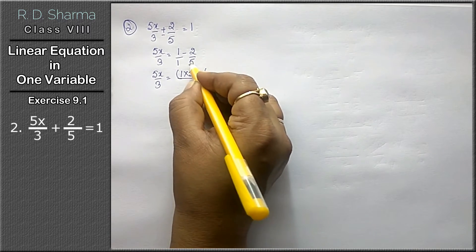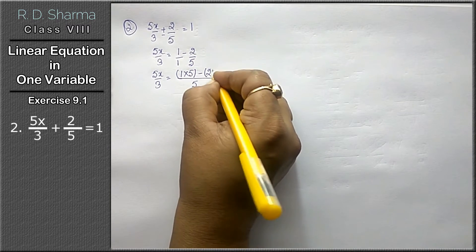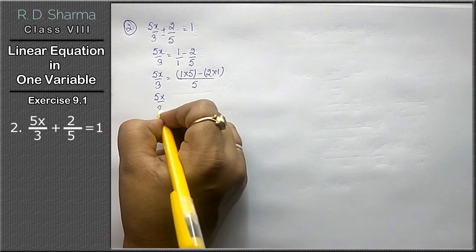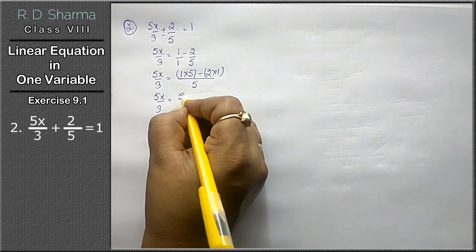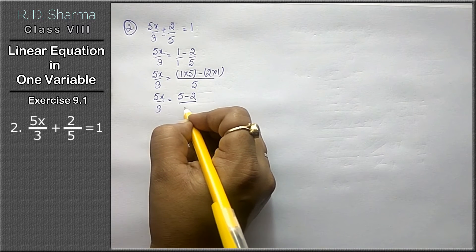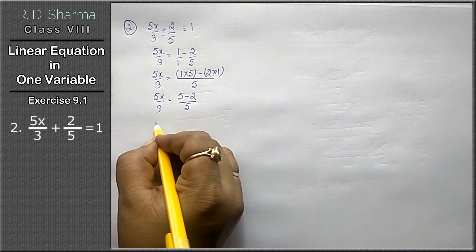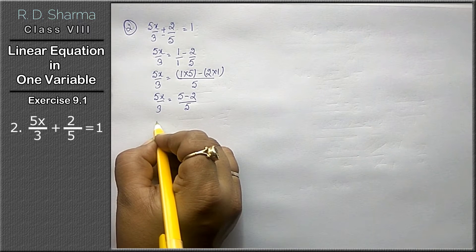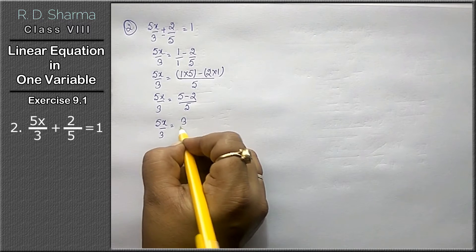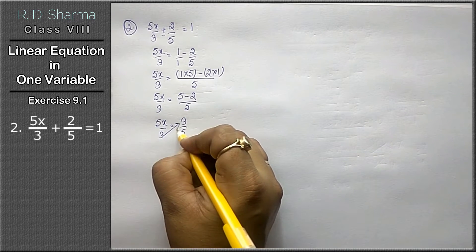5 minus 1 times 2, that gives us 5x upon 3 equals to 5 ones of 5 minus 2 ones of 2, upon 5. So 5x upon 3 equals to 3 upon 5. Now the divide on this side becomes multiply when moved across.